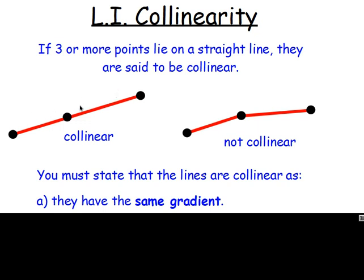Or if the gradient for that was negative five, then the gradient for that was negative five. Great, it's got the same gradient. So there is a chance it could be collinear. However, it also might not be. And there's something else that you need.